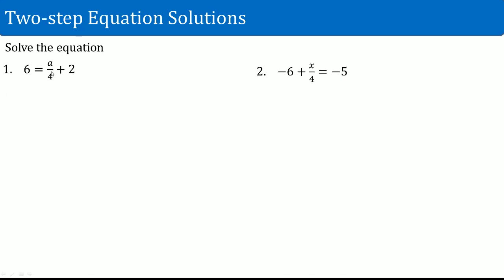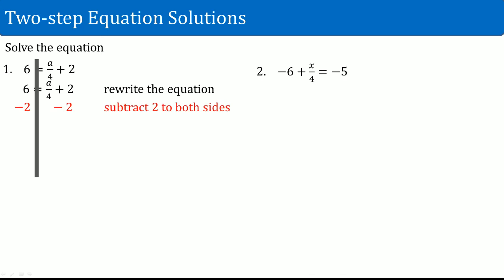Number one: we have 6 equals a divided by 4 plus 2. First step is always to rewrite the equation and draw the lines straight down, separating the left from the right. We see that the variable is on the right-hand side. What is attached to the variable so far is a divide by 4 and a plus 2. The most outward thing is the plus 2, so that is what we have to get rid of. To undo 2, we do the inverse, which is subtract 2. You subtract 2 from both sides. The left-hand side: 6 subtract 2 becomes 4. On the right-hand side, the two subtract two cancels out, leaving a divide by 4.